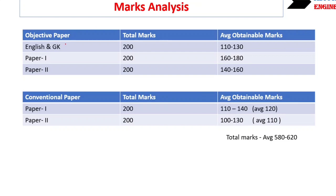The first paper is English and GK, total marks are 200, and candidates can easily obtain between 110 to 130. Paper-I, the mechanical engineering paper, students can easily score 160 to 180 marks. Paper-II में भी 140 से 160 तक score किया जा सकता था। On an average, 400 marks could easily be scored in the objective papers.